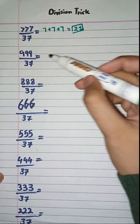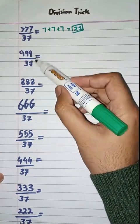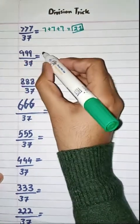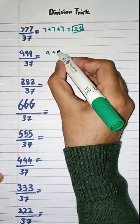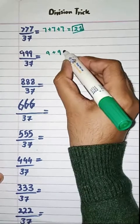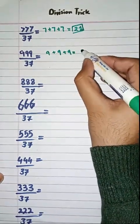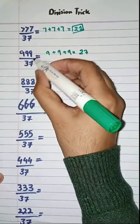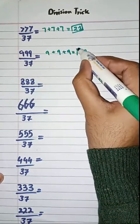Got it? Let's move on. Now we have to divide 999 by 37. The simple trick is we have to add the digits of this number: 9 plus 9 plus 9, which is equal to 27. So 999 divided by 37 is equal to 27.